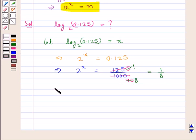That is, we have 2 to the power of x is equal to 1 upon 8. Or we can write this as 2 to the power x is equal to 1 upon 2 to the power 3, since 2 cube is 8.